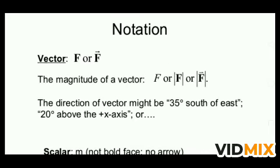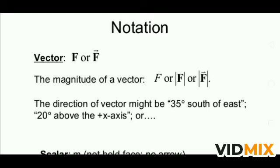How can we write a vector? What are the notations? In many books, a vector is represented by a bold letter, or an arrow is placed on top of the letter. For example, F written in bold or F with an arrow on top — both represent a vector quantity. If you have to write the magnitude of a vector, simply write it as F (not bold), or use the modulus notation: |F vector| gives the magnitude.